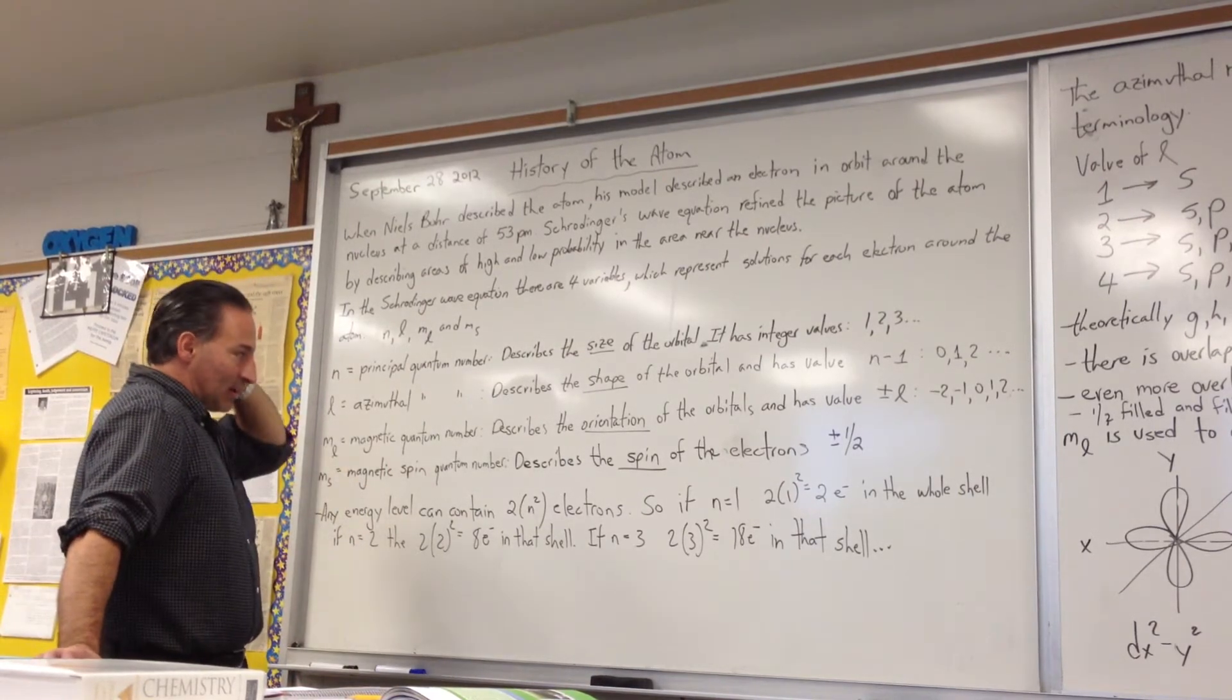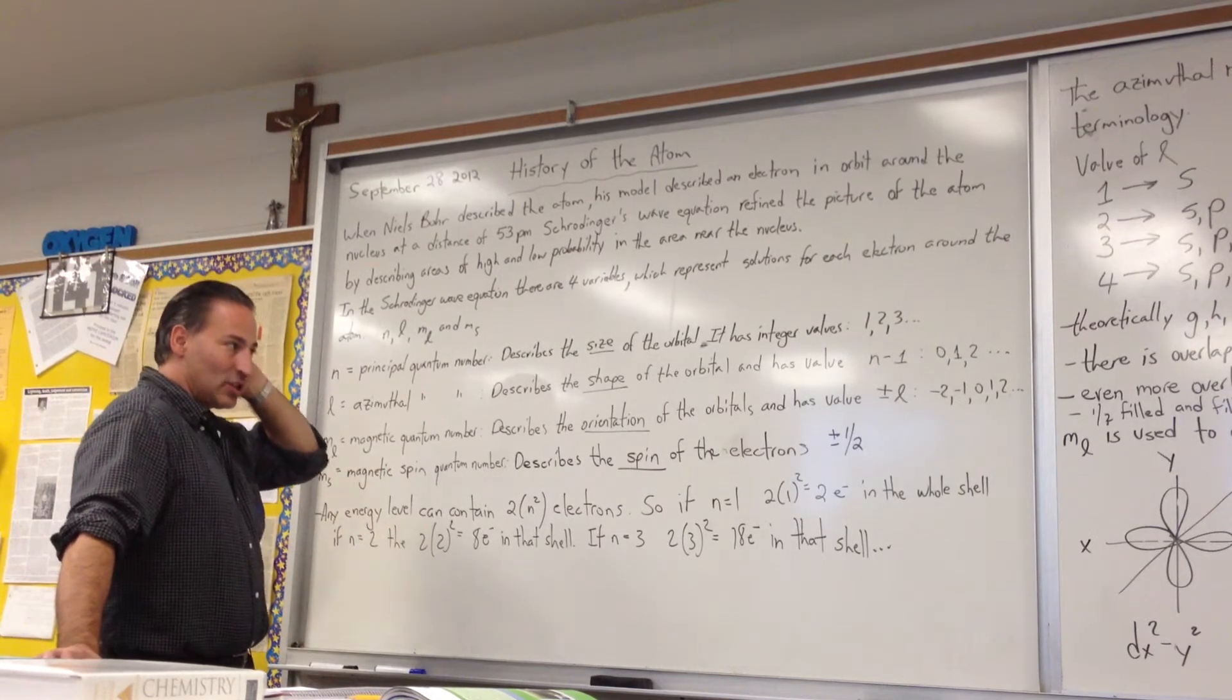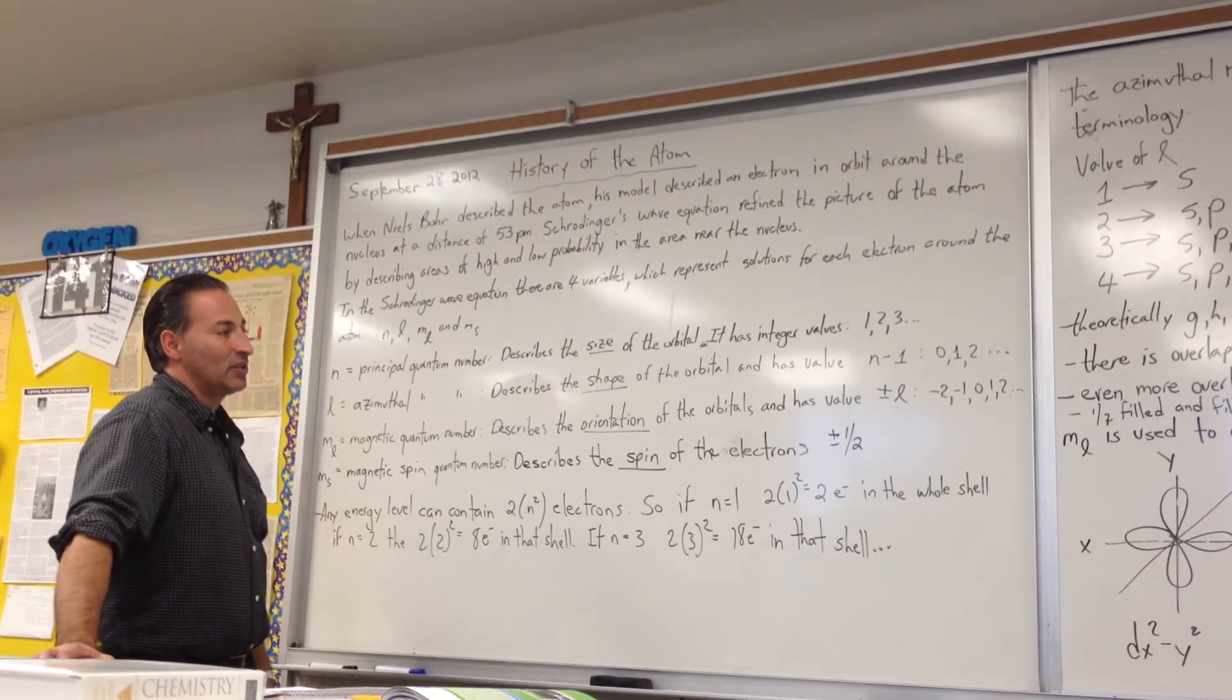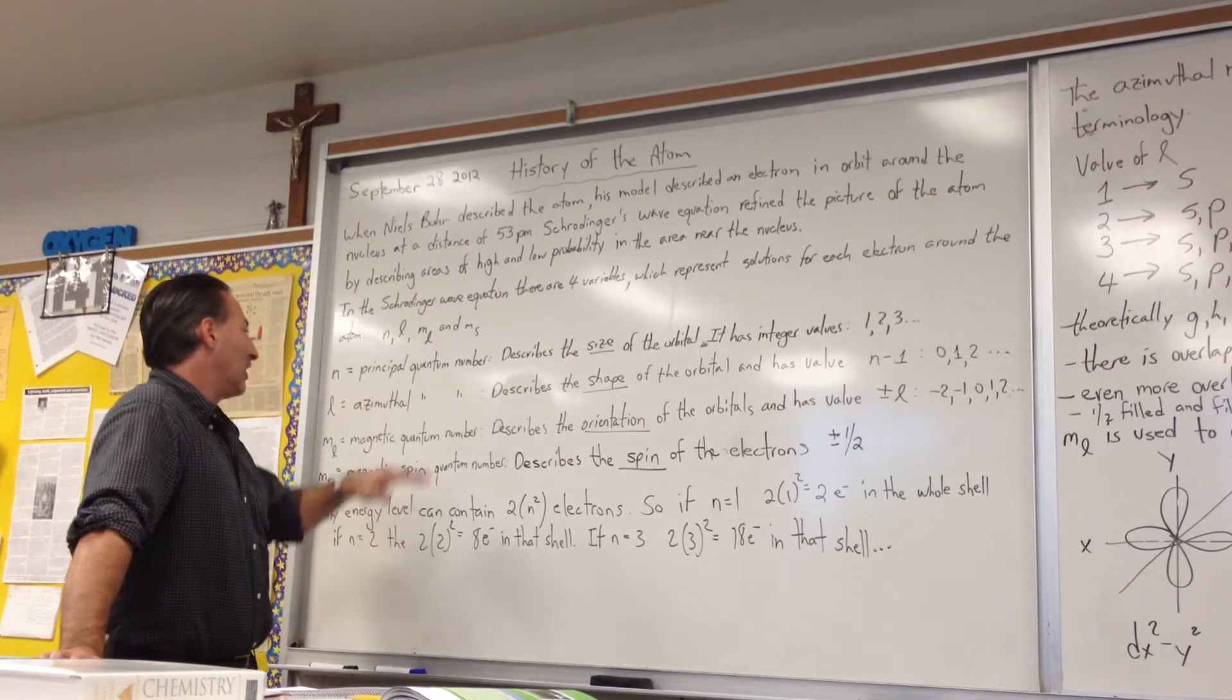The M sub L, the magnetic quantum number, describes the orientation of the orbitals and has a value that is either plus or minus the value of L.